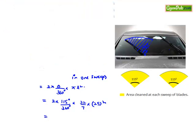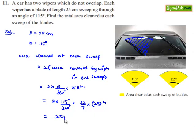That is equal to 2 times 115 is 230, times 22, times 25 squared is 625, divided by 360 and it is also divided by 7. So finally, we get the value as 1254.96 centimeters squared.